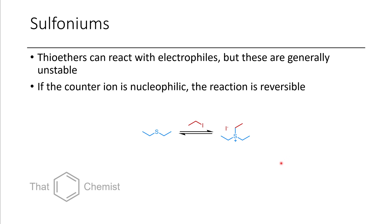One last alkylation example: thioethers can react with alkylating agents to make sulfoniums. In the case of an alkyl iodide, iodide is still a very good nucleophile, so it could attack at one of the ethyl groups and convert the product back into starting material — these don't tend to be very stable. If you had a different counter ion such as tetrafluoroborate, you might be able to isolate these salts.